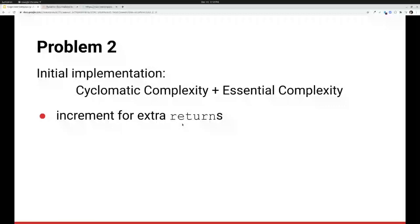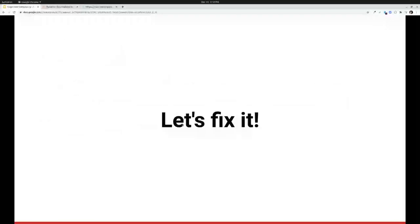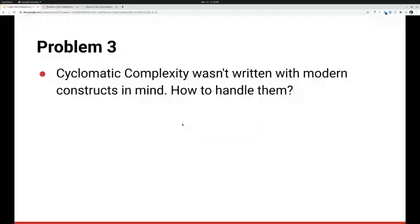And so we thought, okay, let's fix it. We can fix the implementation. We'll stop incrementing for the extra returns. But we still had more problems. The first was the cyclomatic complexity wasn't written with modern constructs in mind. It was published in 1976, and in a COBOL context. And so it didn't explicitly address things like try-catch lambdas, that sort of thing. But the other part was that we still needed something that gets at understandability, and cyclomatic complexity just doesn't.